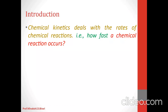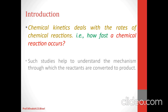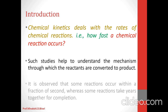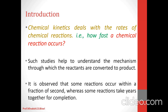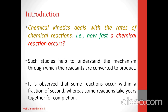Chemical kinetics deals with the rates of chemical reactions — that is, how fast a chemical reaction occurs. Such studies also help to understand the mechanism through which reactants are converted to products. It is observed that some reactions occur within a fraction of a second, whereas some reactions take years together for completion. The rapidity of a reaction is given by chemical kinetics.